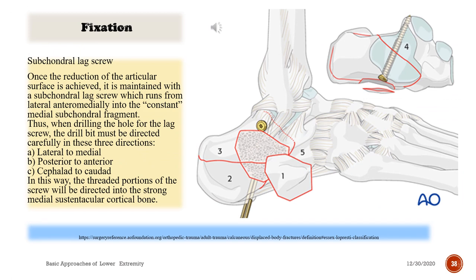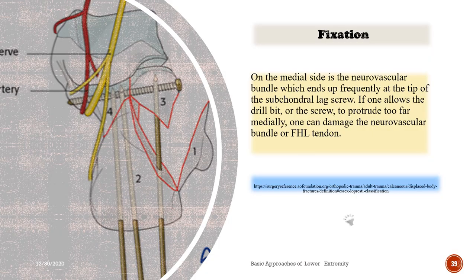Fixation — subchondral lag screw: once reduction of the articular surface is achieved, it is maintained with a subchondral lag screw running from lateral-anterior to medially into the constant medial subchondral fragment. The drill must be directed in three directions: (A) lateral to medial, (B) posterior to anterior, (C) cephalad to caudad, so the threaded portion engages the strong medial sustentacular cortical bone. The neurovascular bundle on the medial side lies near the screw tip; if the drill or screw protrudes too far medially, it can damage the neurovascular bundle or the FHL tendon.